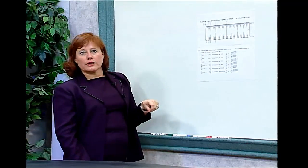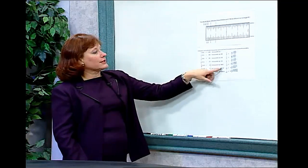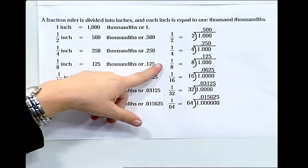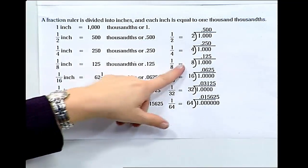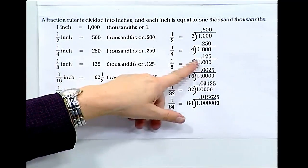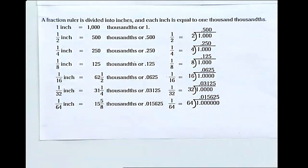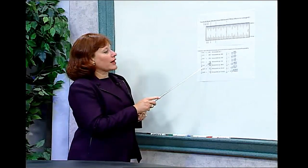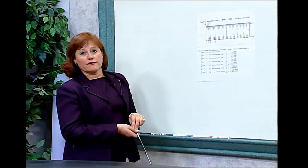Another way to help you know how to convert is to know that you can always take the fraction form of the ruler and you can do the division. For one-eighth of an inch, I can divide eight into one and I get .125. If I have .125, that corresponds to one hundred twenty-five thousandths.